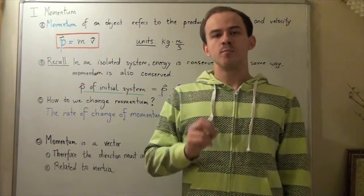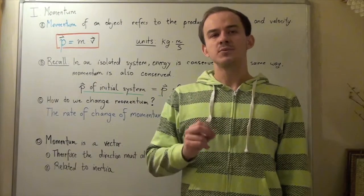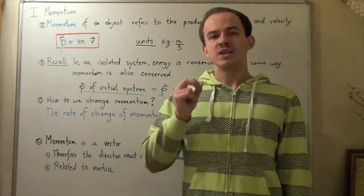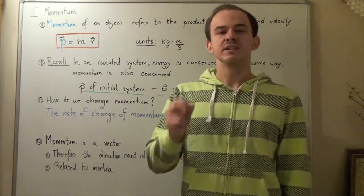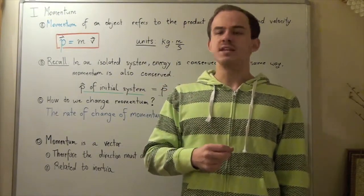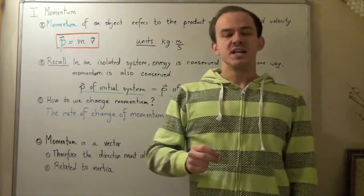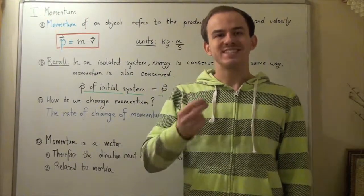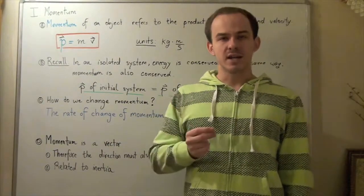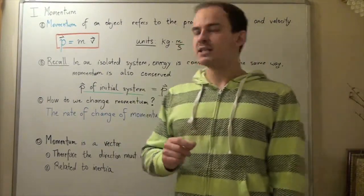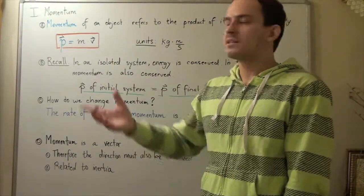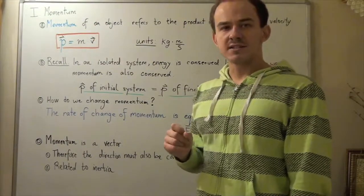We already spoke about two important physical quantities of an object: mass and velocity. Whenever we know the mass and the velocity of an object or a system, we can find a third physical quantity known as momentum. Momentum of an object or a system is simply the product of the mass and the velocity of that object, and it's represented by the lowercase p. So our lowercase p is equal to mass multiplied by velocity.